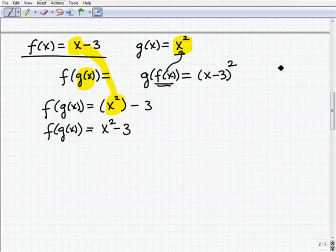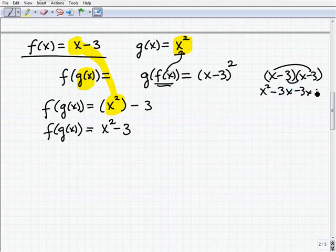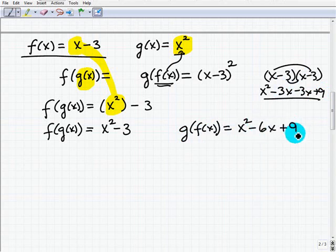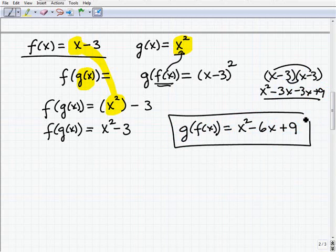So let's go ahead and just use our FOIL method here. x minus 3, x minus 3. There's a couple other techniques you have. x squared, negative 3x, another negative 3x, and a positive 9. So g of f of x, when you combine like terms, and everything's said and done here, is x squared minus 6x plus 9. So there's g of f of x and f of g of x.